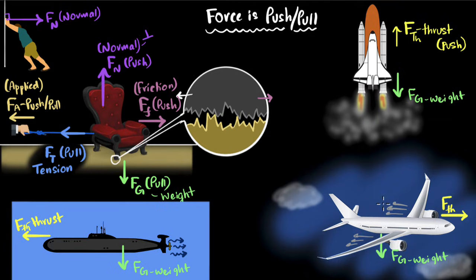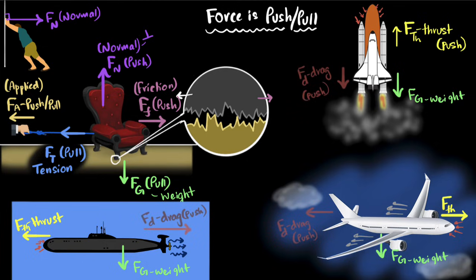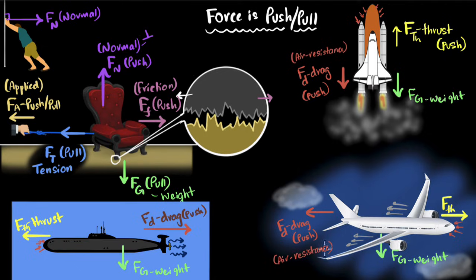Notice that all these things are moving through a fluid — air or water or liquid in general, they're all fluids. As things move through fluids, the fluid atoms and molecules are going to hit them in the opposite direction. As the rocket goes up, the air molecules hit it from above. The water molecules hit the submarine backwards. This generates a backward force which we call drag. A drag force is a push generated by the particles of the fluid hitting these objects, and it's always in the opposite direction of the motion. In some sense it's similar to friction in that both oppose motion. Drag forces in air are also often called air resistance.